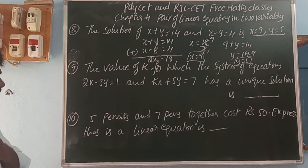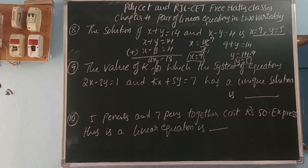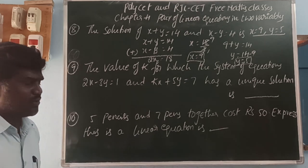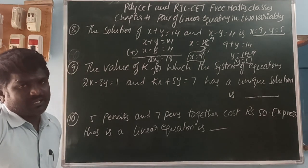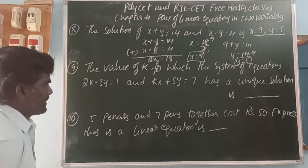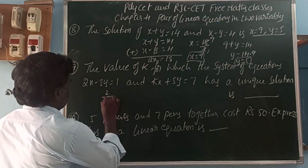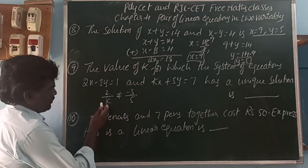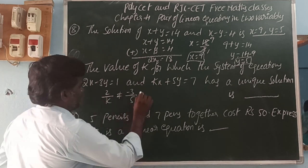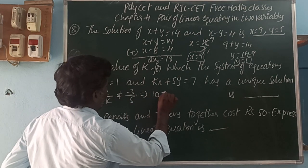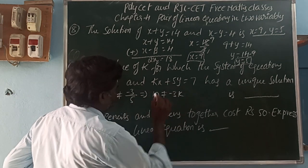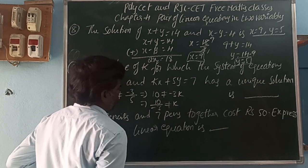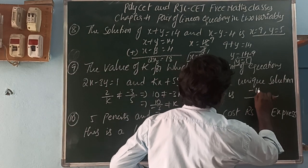Next, find the value of k for which the system of equations 2x minus 3y equals 1 and kx plus 5y equals 7 has a unique solution. For a unique solution, 2 by k is not equal to minus 3 by 5. Cross-multiplying: 2 into 5 equals 10, which is not equal to minus 3 into k. So 10 by minus 3 is not equal to k, meaning k is not equal to minus 10 by 3.